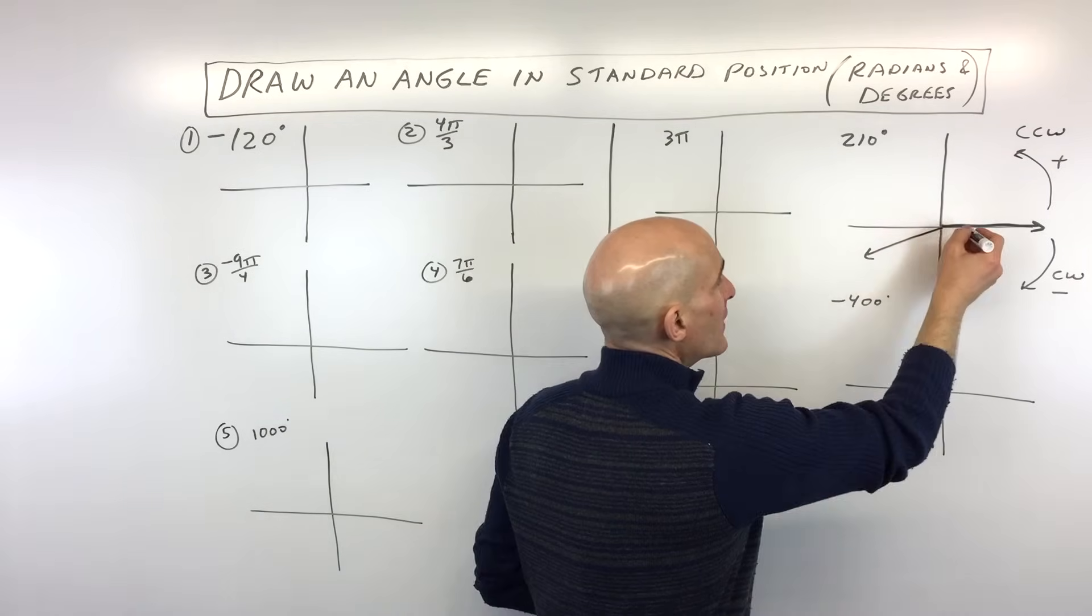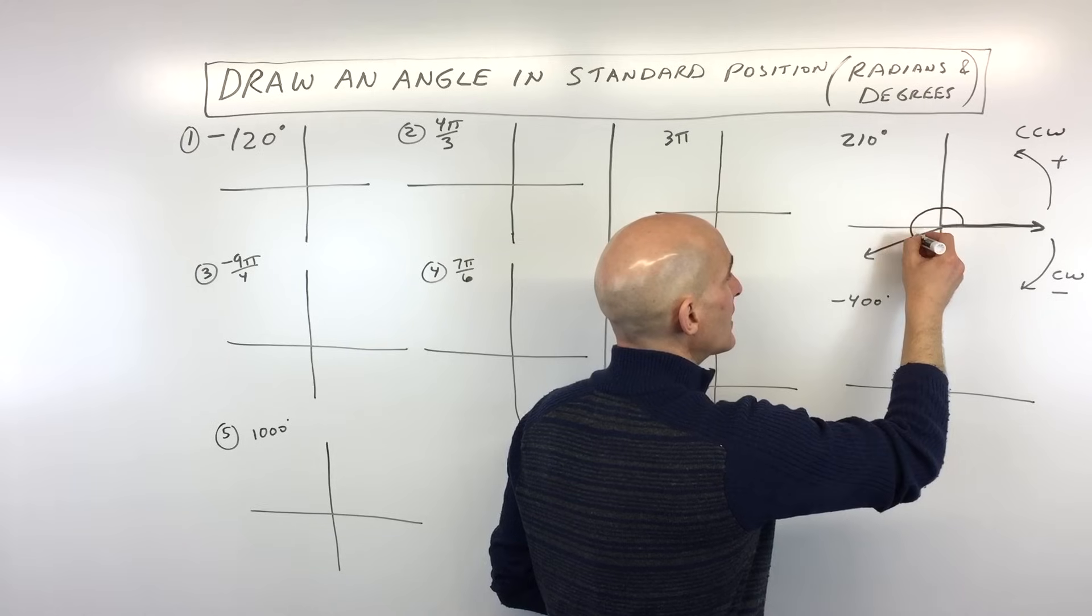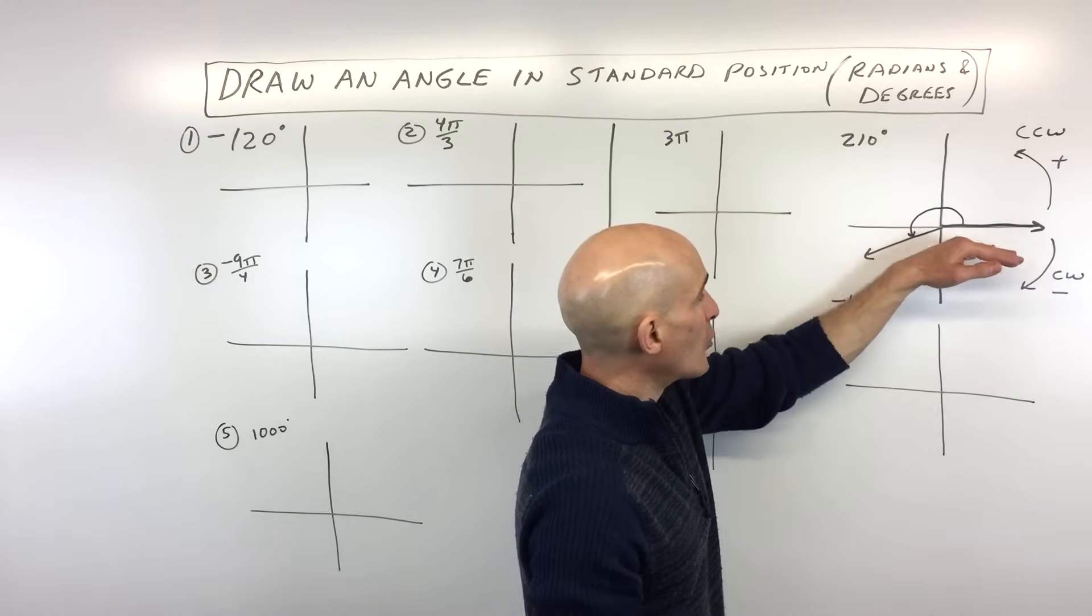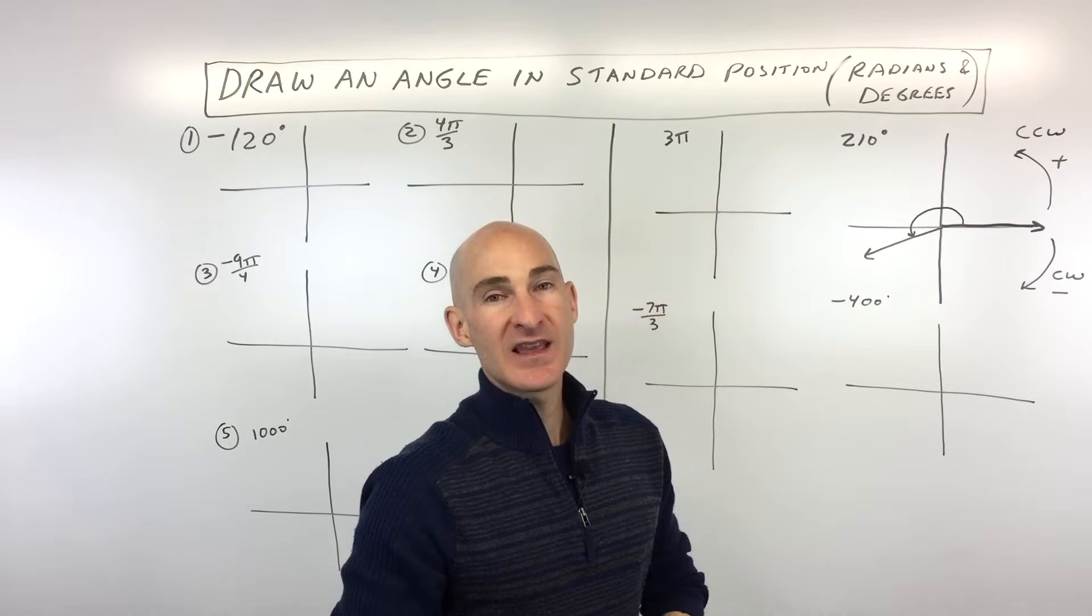Now, what I like to do is I like to draw an arrow just to show the direction that I'm heading. And this is your initial ray. This is your terminal ray. And that's the angle there in between.